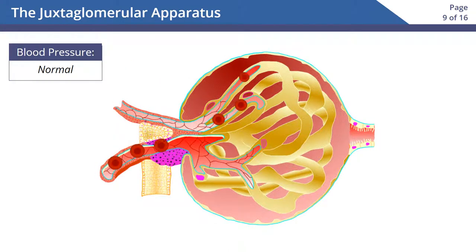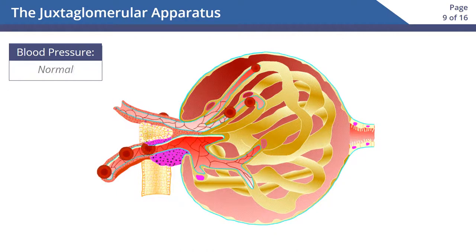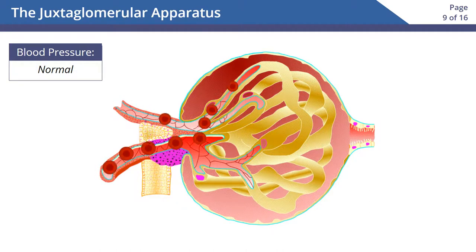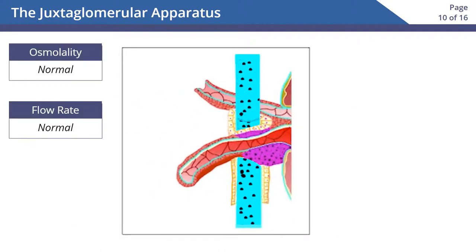Now let's examine the functions of these cells using specific examples. When systemic blood pressure decreases, there is a decreased stretch of the JG cells, which leads to their release of renin. Renin release causes the activation of the renin-angiotensin mechanism, which ultimately leads to an increased blood pressure.